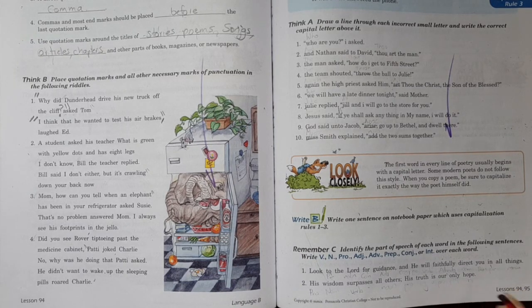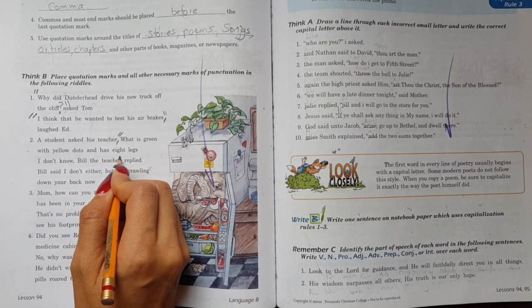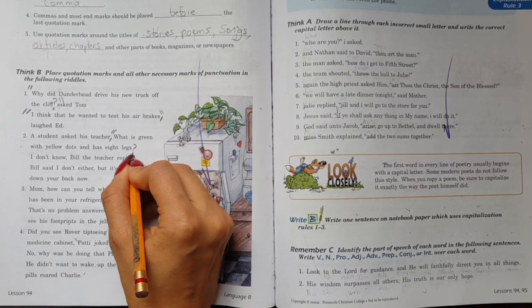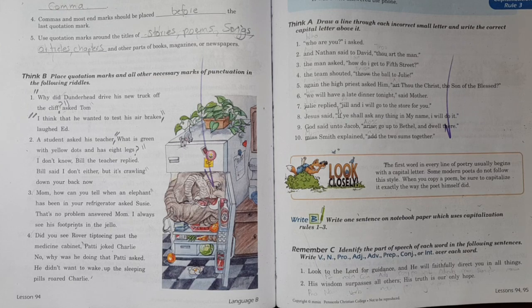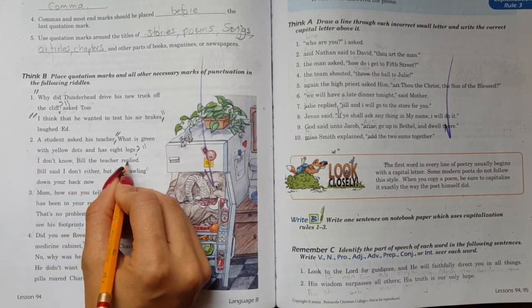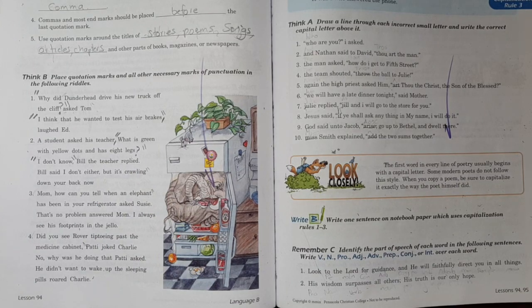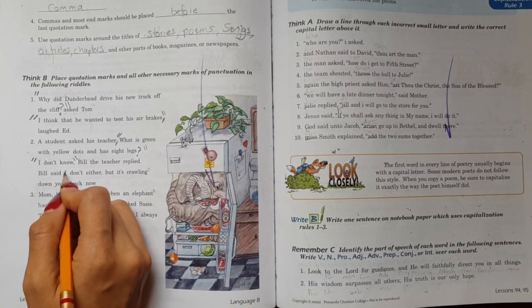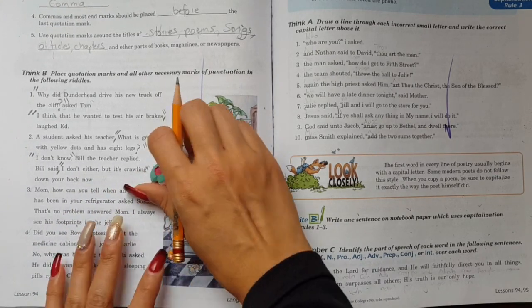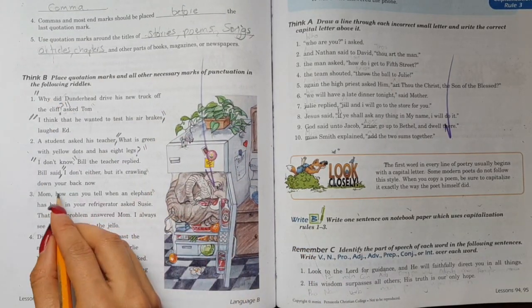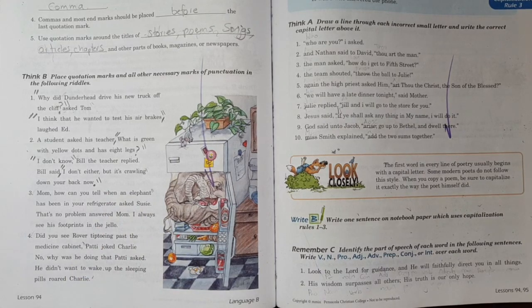Let's do point number two. A student asked his teacher. Quotation marks, what is green with yellow dots and has eight legs, question mark and quotation mark. I don't know Bill, the teacher replied. So quotation marks here. Bill the teacher replied. Bill said I don't either but it's crawling down your back now.